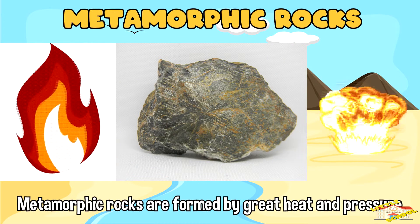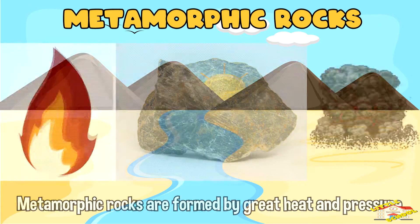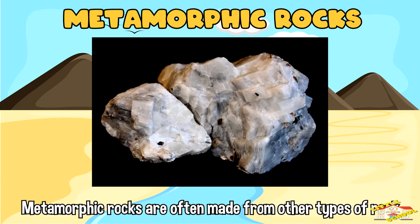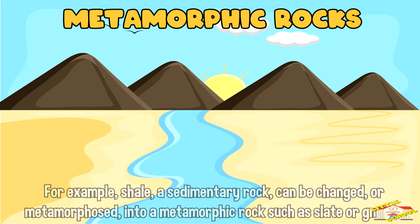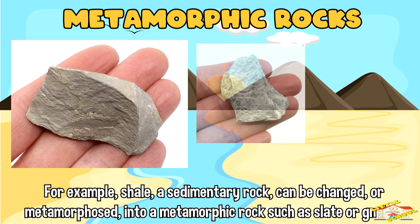Metamorphic rocks are formed by great heat and pressure. They are generally found inside the earth's crust where there is enough heat and pressure to form the rocks. Metamorphic rocks are often made from other types of rocks. For example, shale, a sedimentary rock, can be changed or metamorphosed into a metamorphic rock such as slate or gneiss.